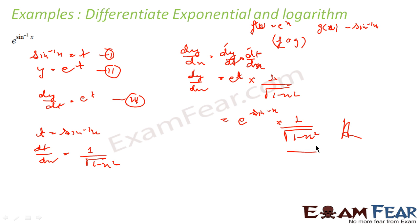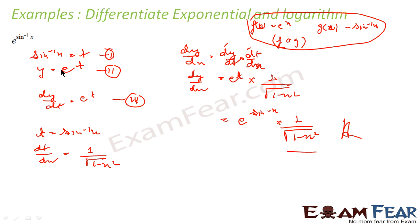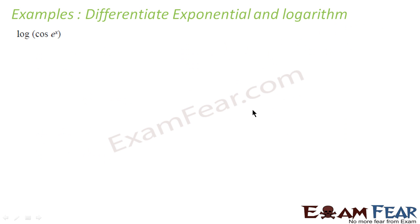Very simple — what we have done is identify a composite function, write sin inverse x as t, differentiate using the chain rule, and replace t back in terms of x. Now let's take one more example involving log: y equals log of cos(e to the power x).